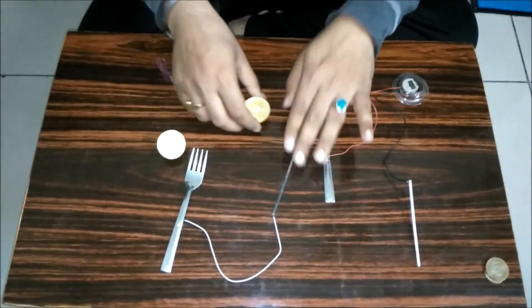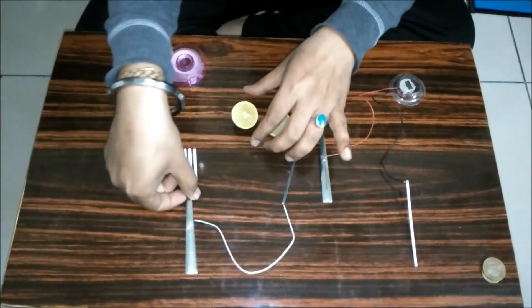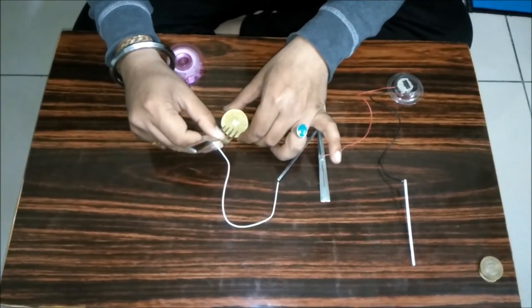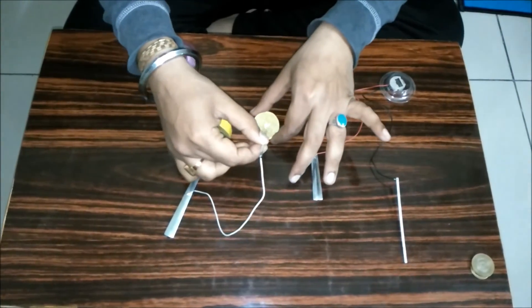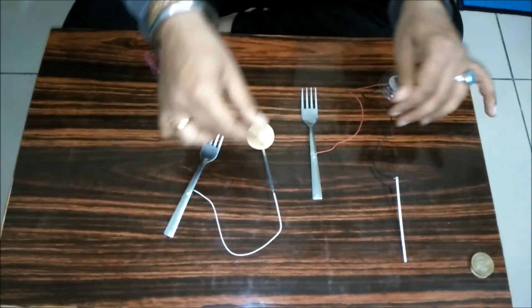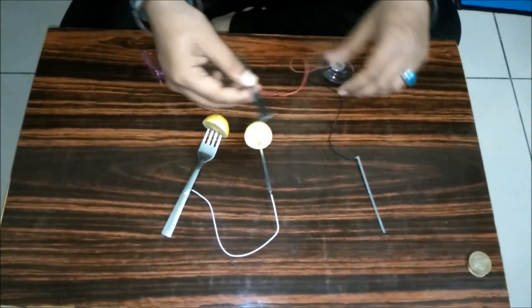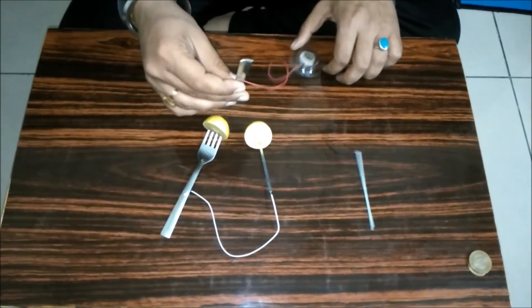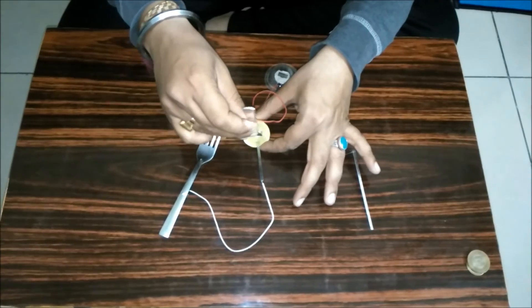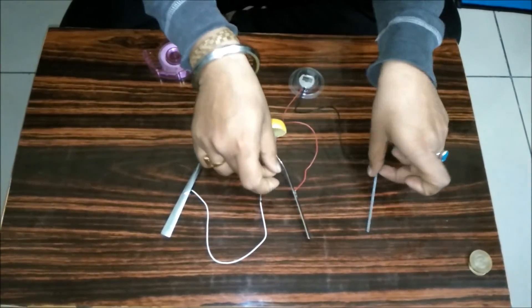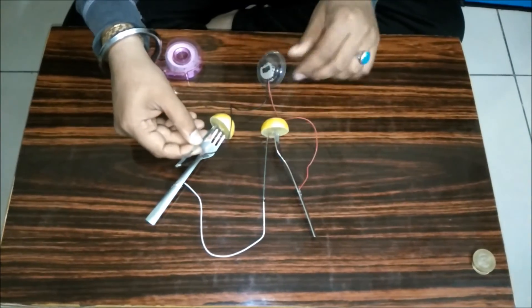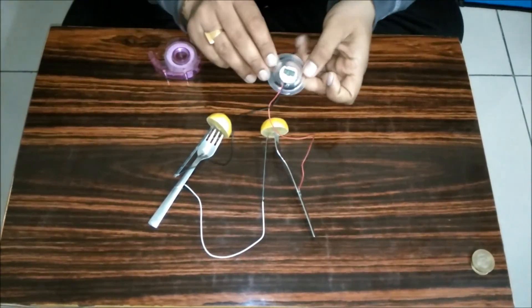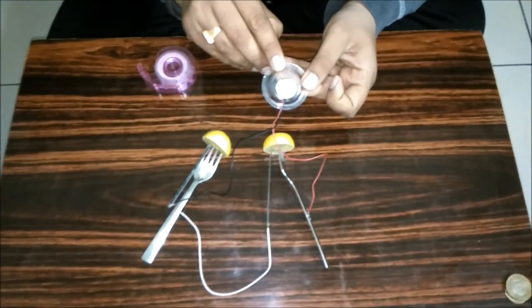Now we take two halves of our lemon. The fork will go in this half and zinc strip will go in this half. Now the fork will go in this half and this zinc strip will go in this half. Now you can see our wristwatch is working now.